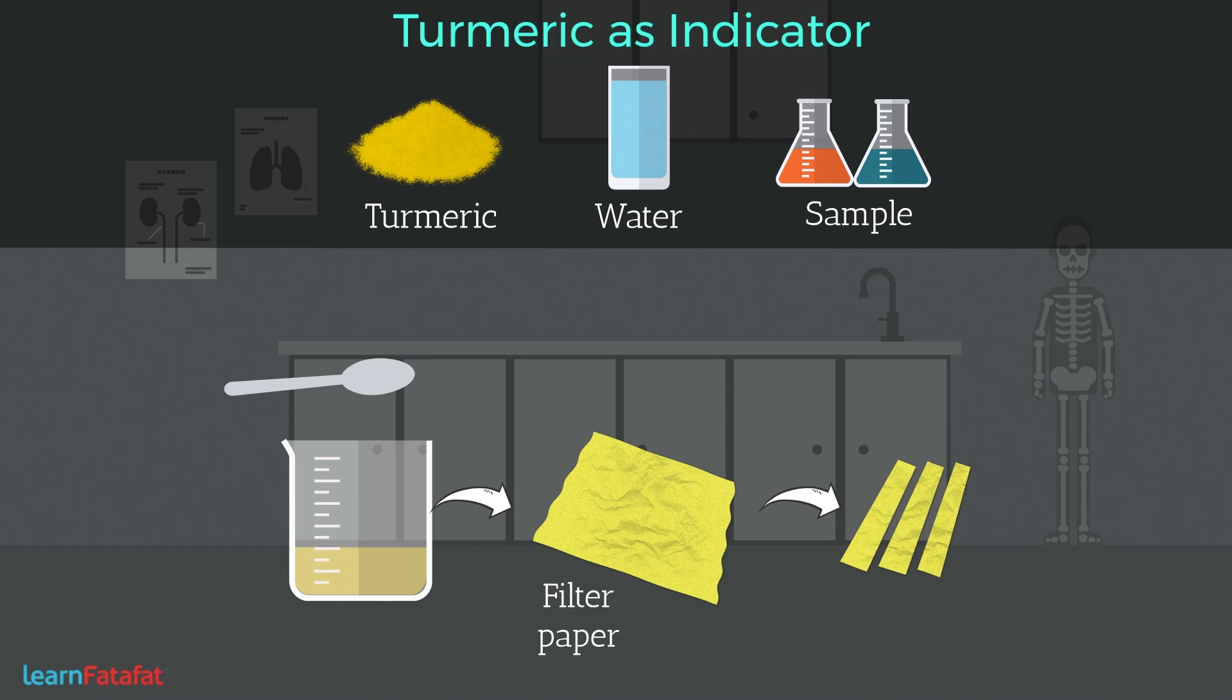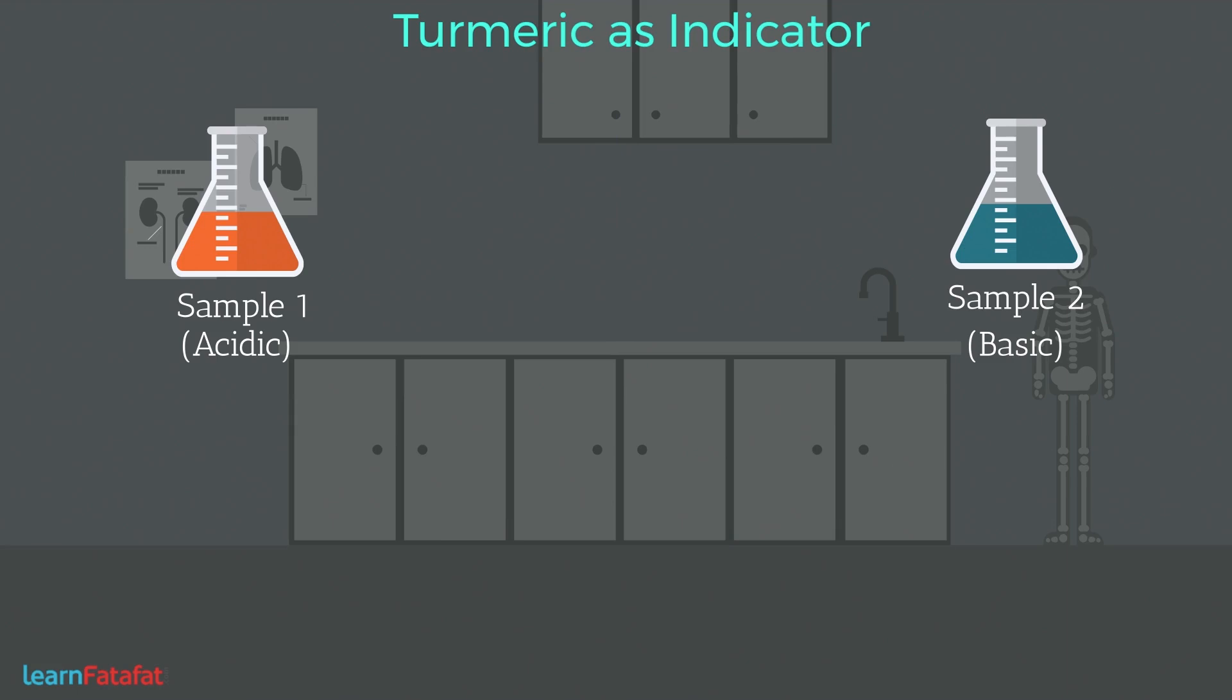Now we can test if the substance is acidic or basic. If we put a drop of basic solution on the strip, then it turns to red.